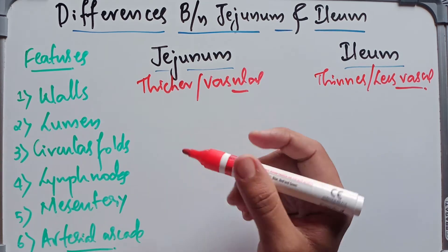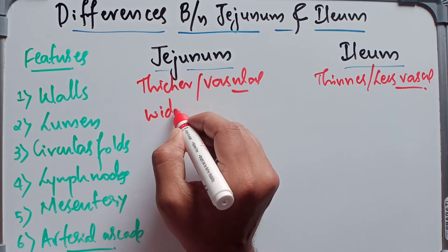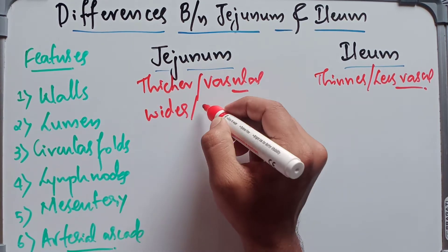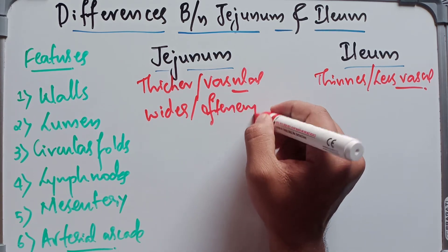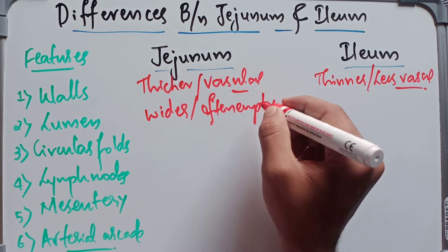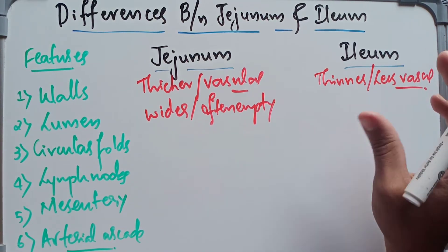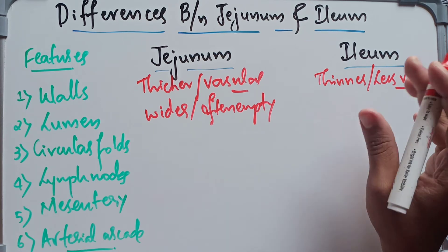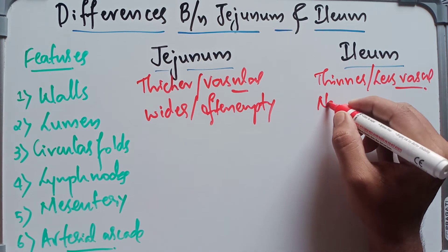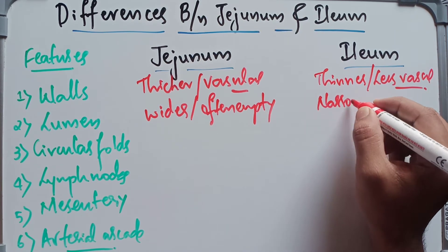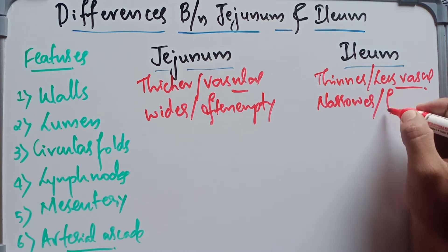Coming to the lumen: in the jejunum the lumen is wider and often found empty. Whereas in the ileum, the lumen is narrower and is often found full.